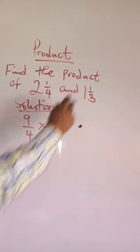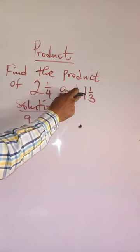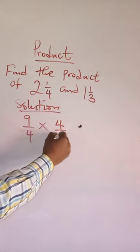9 over 4 times, multiply this times this, 3 plus 1, that is 4 over 3.